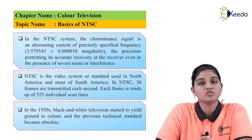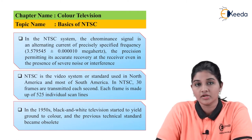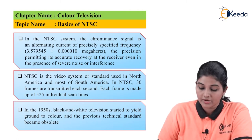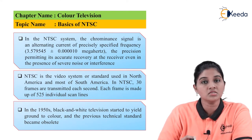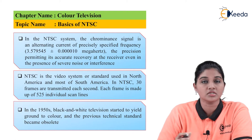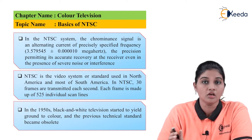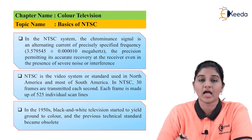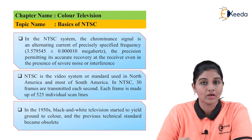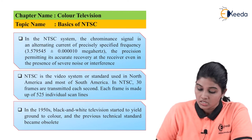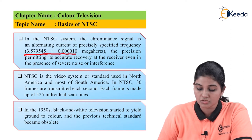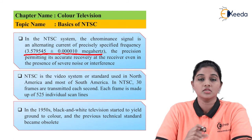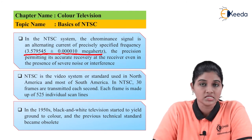The full form of NTSC is National Television System Committee. In NTSC, the chrominance signal is an alternating current signal having a precise and accurate value of frequency. The value of frequency is given as 3.579545 plus or minus 0.000010 megahertz. This value is defined very precisely and accurately.